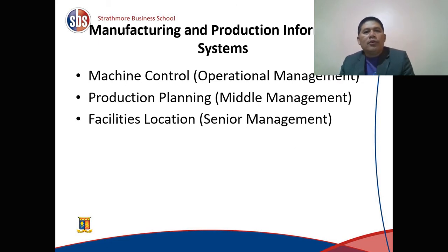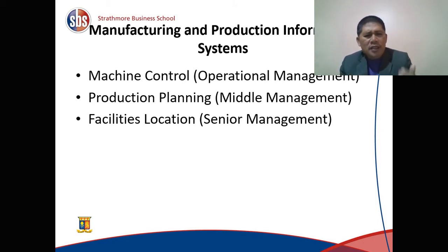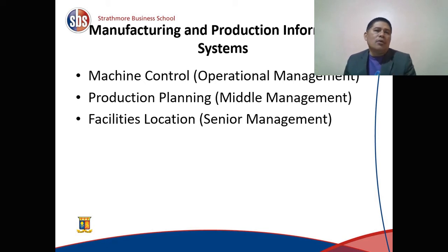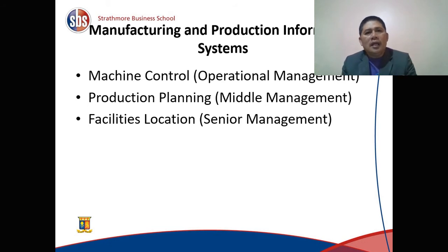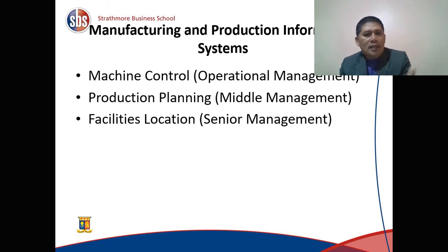For manufacturing and production information systems, we have machine control for operational managers. This is important because we want to maximize the utilization of machines. For instance, at Imara Medical Center, if we spend one million Kenya shillings on a machine, we have to maximize its utilization, know exactly when the next service is due, and avoid downtimes so the machine doesn't break down when we need it most.